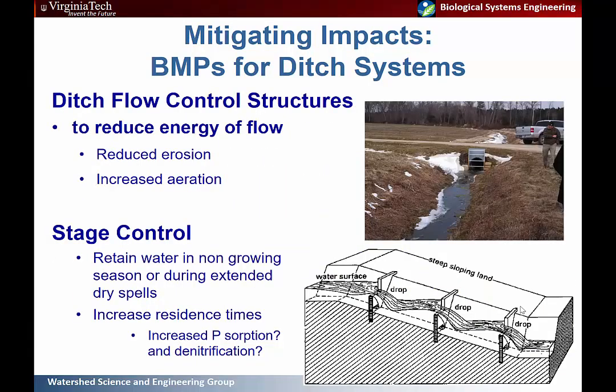You can invest a bit more with flow control structures to reduce energy of flow, reduce erosion, and increase aeration of the system. Or you can go more complex with actual stage control in the ditches to retain water during the non-growing season or extended dry spells during the growing season — increasing residence time, utilizing natural filtration capacity, and potentially increasing phosphorus absorption and denitrification, which is analogous to water table control efforts with tile drainage.